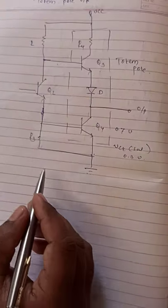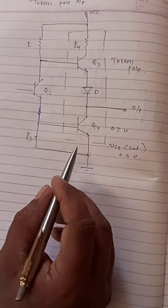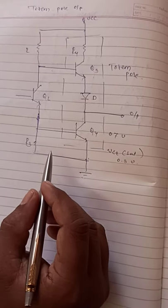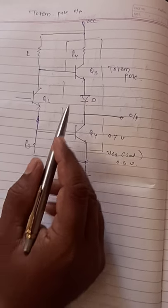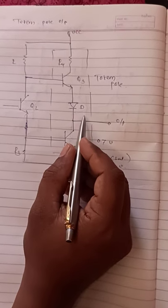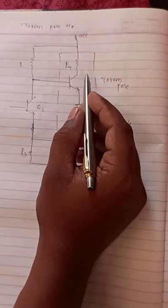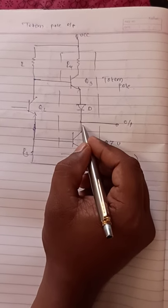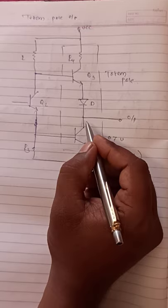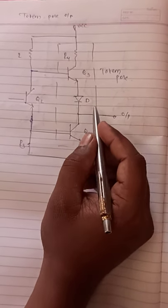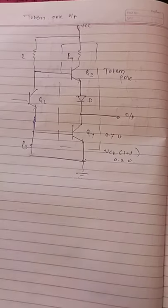The advantage of that totem pole output: when the circuit can work with Q3, then D will be removed and R4 connected directly through the collector to Q4. The advantage is there is no current through R4 in the output low state.